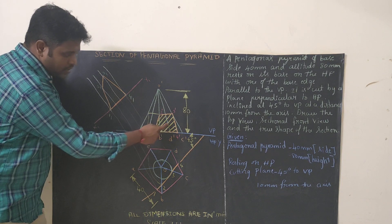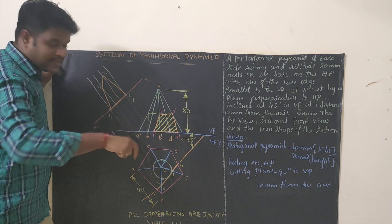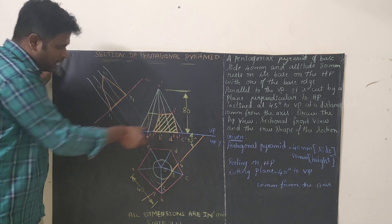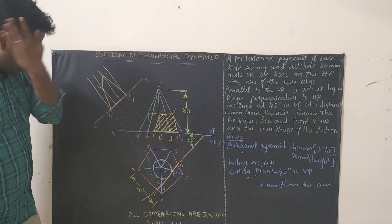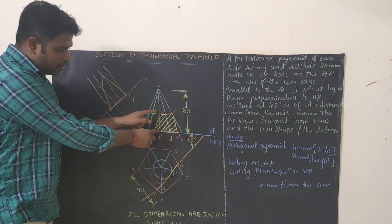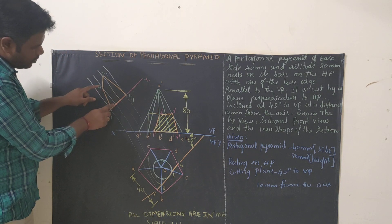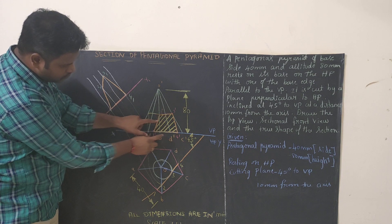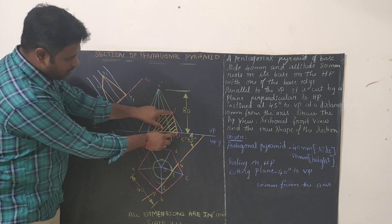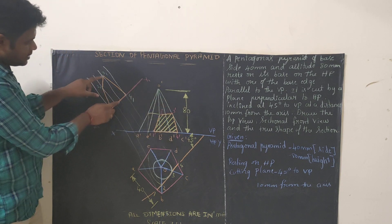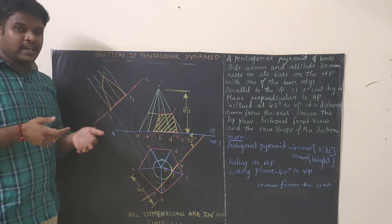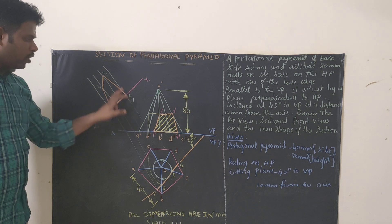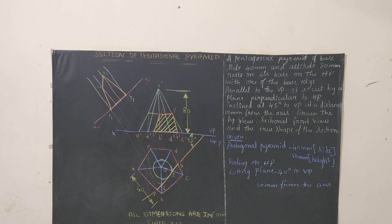In the sectional front view, points 1-dash and 4-dash lie on the reference axis itself, so you can mark 1-1 and 4-1 directly. For point 2-dash: take your compass, keep it at B-dash, and measure the distance from B-dash to 2-dash. Cut an arc from the new reference line to get point 2-1. Similarly for 3-dash, measure the distance from the reference line and mark 3-1. After getting points 1-1, 2-1, 3-1, and 4-1, join all the points.